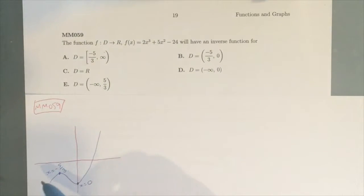And the reason is a function needs to be restricted to a one-to-one function in order to have an inverse function exist.